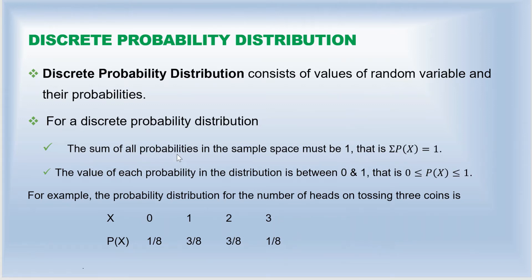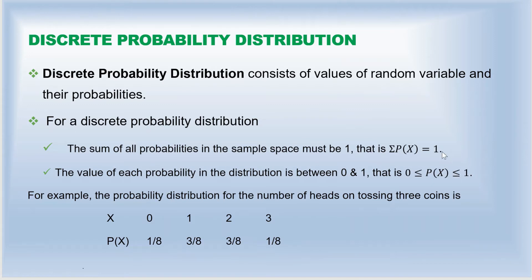The first condition is that the sum of all probabilities in the sample space must be 1 — that is, the sum of P(x) must equal 1. For example, here the probabilities are 1/8, 3/8, 3/8, and 1/8. So 1 plus 3 plus 3 plus 1 is 8, and 8 over 8 is 1. So the first condition is satisfied.